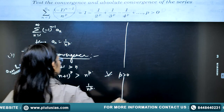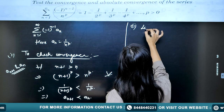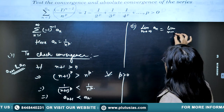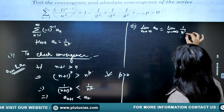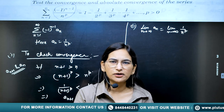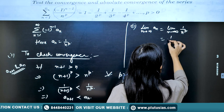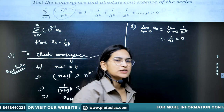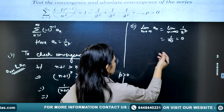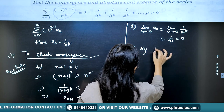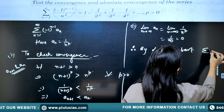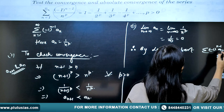Now we check the second condition: limit as n approaches infinity of a_n = limit as n approaches infinity of 1/n^p. Since p is greater than 0, p is always positive and in the denominator, so this equals 1/infinity = 0. Both conditions of the Leibniz test are satisfied, and hence by the Leibniz test, the alternating series (-1)^(n-1) * a_n is convergent.